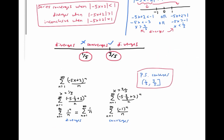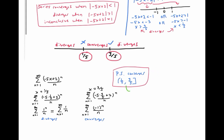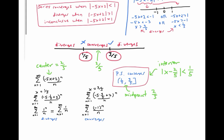I want to make one more observation before leaving this example. Notice that the midpoint of this interval is 2/5. Remember, at the beginning of the problem we calculated the center of the power series, and it was also 2/5. We'll see in a moment that this is no coincidence — in fact, the interval of convergence is always centered at the center of the power series. We could describe the interior of this interval of convergence as the x values for which |x − 2/5| < 1/5, that is, all x values within a distance of 1/5 from the center.